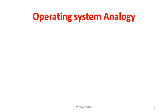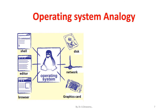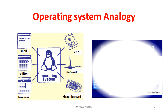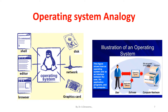Let us see the analogy for operating system. We already know that in a computer we have an operating system that gives instructions for other devices to function properly. This figure shows how an operating system acts as an interface between the user, the application programs, and the computer.